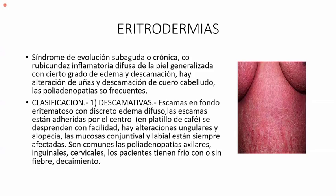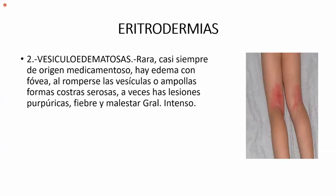Son comunes las poliadenopatías axilares, inguinales y cervicales. Los pacientes tienen frío con o sin fiebre y gran decaimiento. Las vesículas edematosas son raras, casi siempre de origen medicamentoso. Hay edema con fóvea: se presiona y queda la marca. Al romperse las vesículas o ampollas forman costras serosas; a veces hay lesiones purpúricas, fiebre y malestar general intenso.